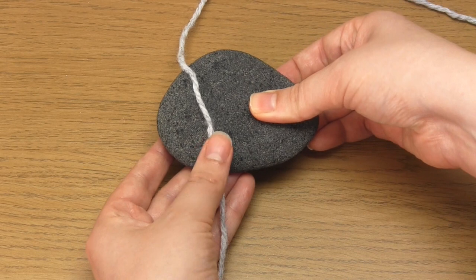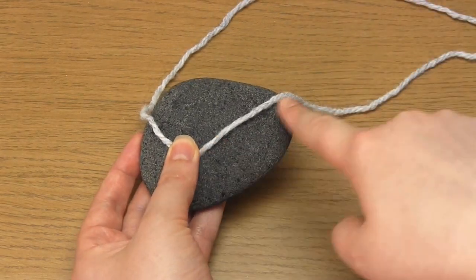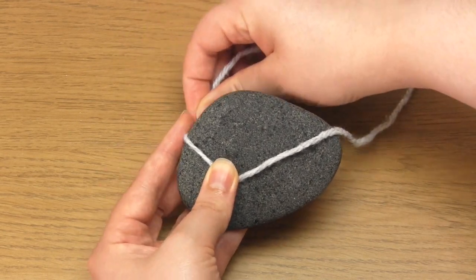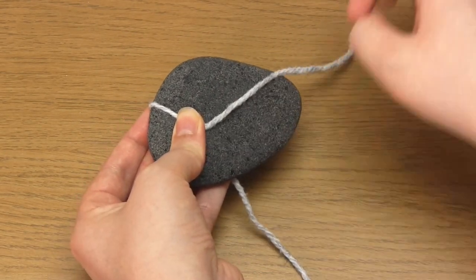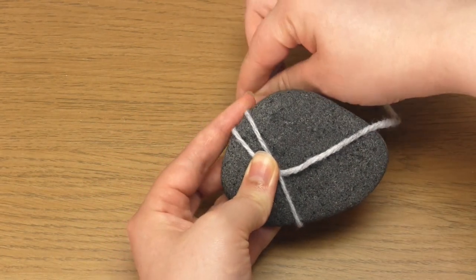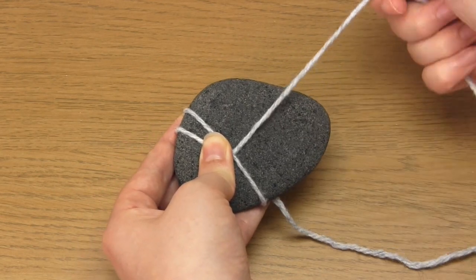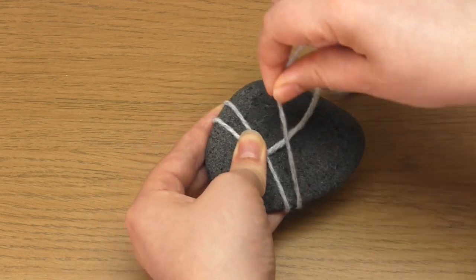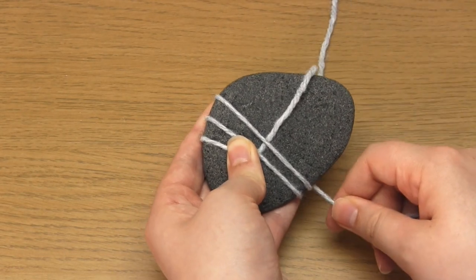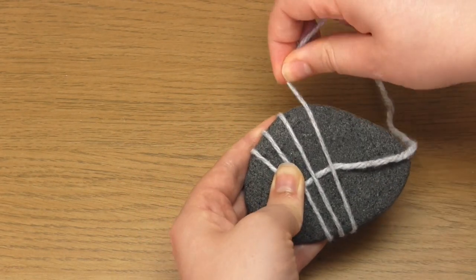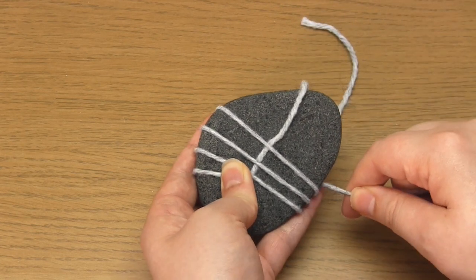Then wrap the yarn all the way around the pebble making sure you trap the yarn tail underneath. Then do a few more wraps again trapping the tail underneath each time. The number of wraps is up to you but I wanted five strands to be seen at the front of the pebble. Make sure you keep tension in the yarn whenever you're wrapping it so that the strands are taut and not loose.